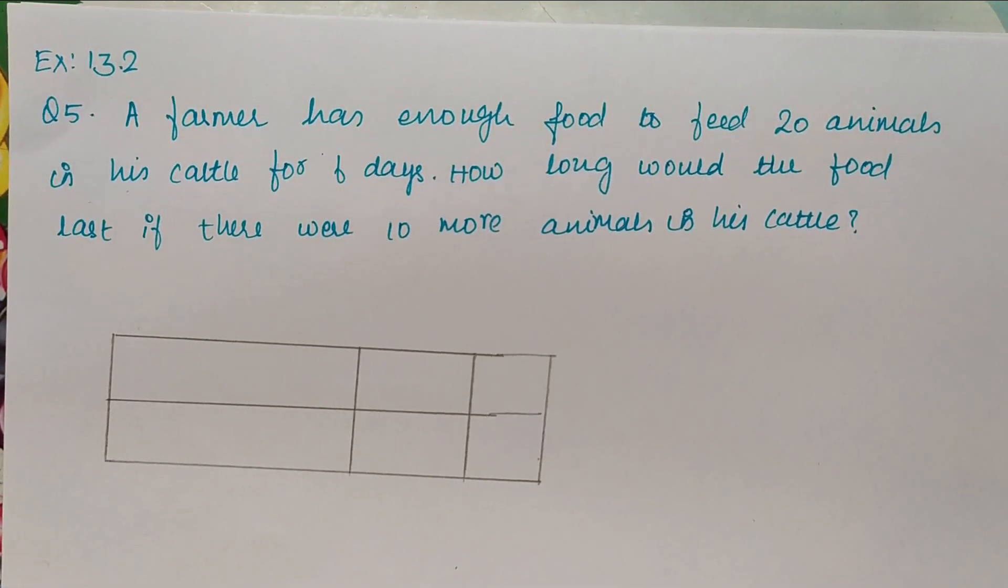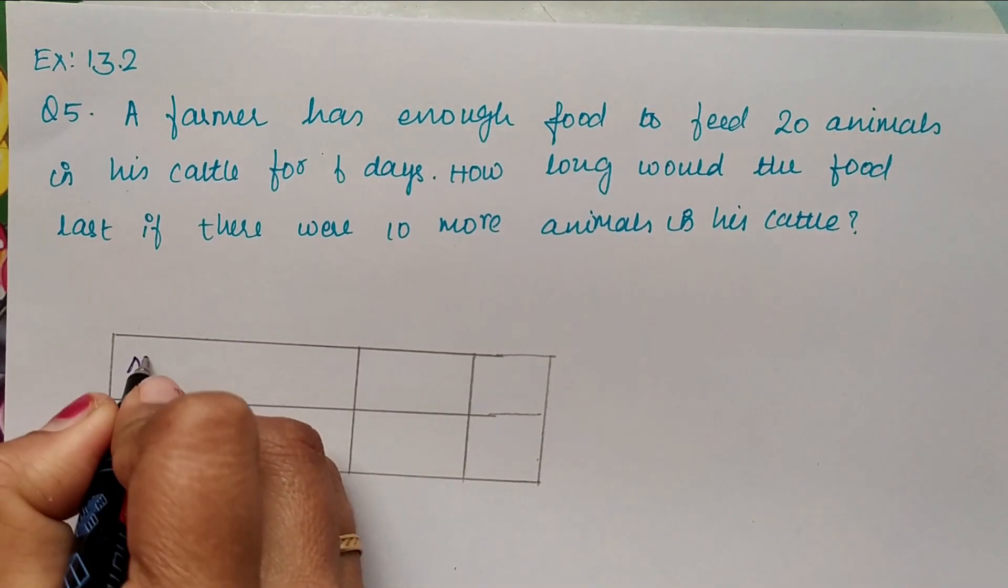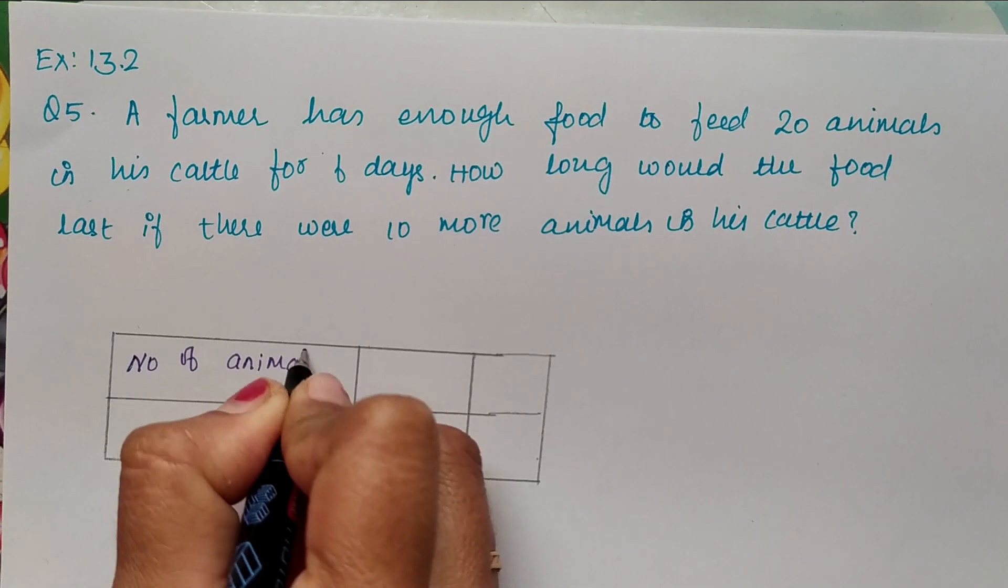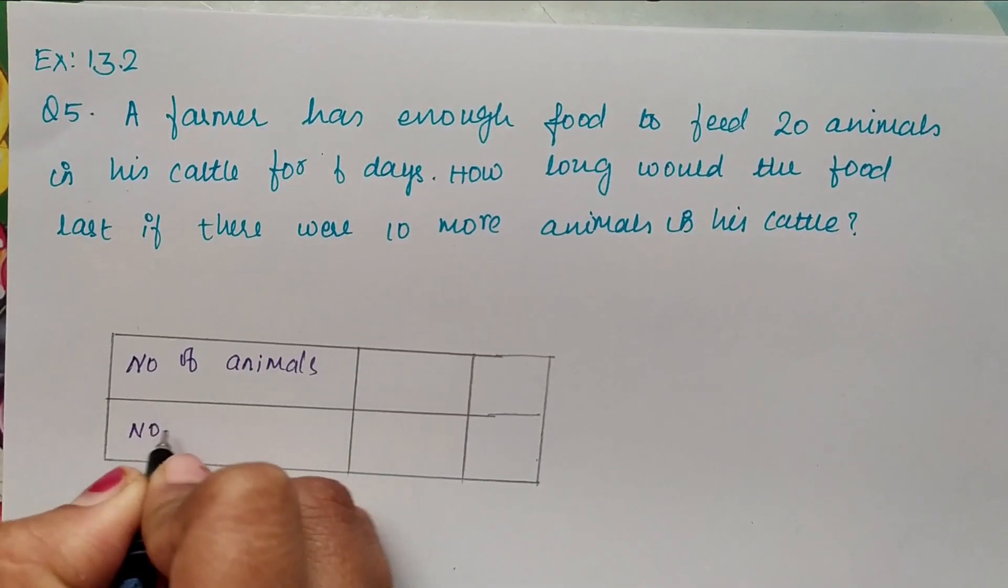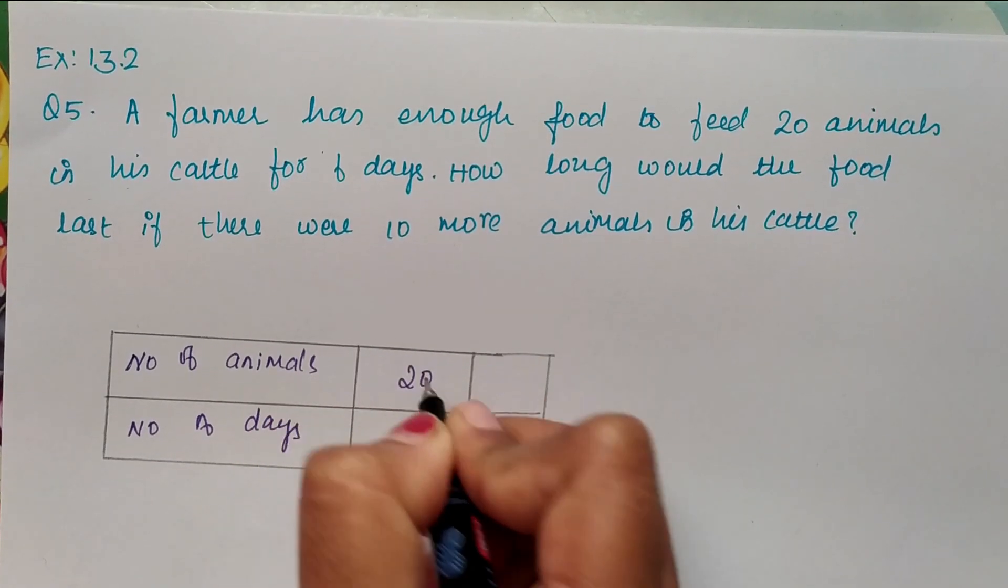For 20 animals he can feed for 6 days. We have to find for 30 animals how many days he will feed. So here, number of animals and number of days. For 20 animals he will feed 6 days, for 30 animals we have to find.